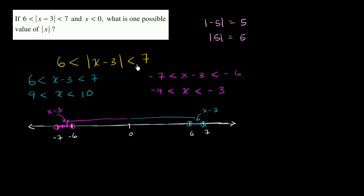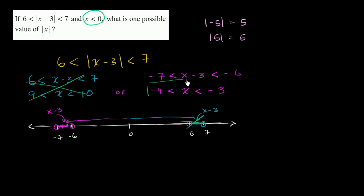Now, if this were our only constraint, x could satisfy either interval. But they also tell us that x is less than 0. So x can't be greater than 9, which rules out the first case entirely, and makes us focus on the second case: x is between negative 4 and negative 3.